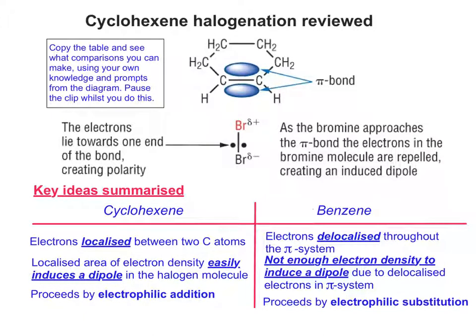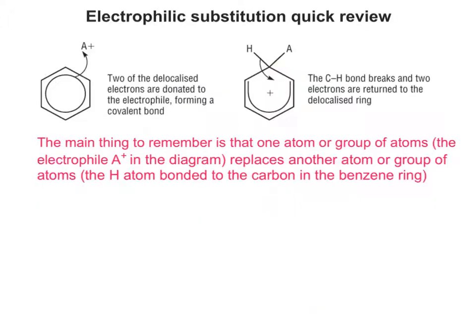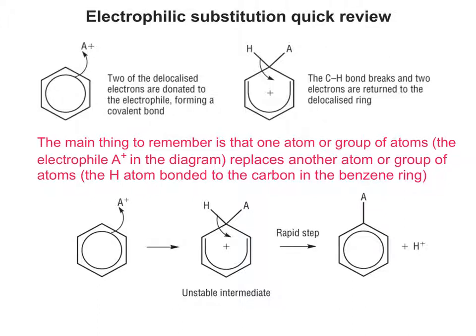Therefore, cyclohexene halogenation proceeds by electrophilic addition, whereas benzene halogenation proceeds by electrophilic substitution. The main thing to remember is that in a substitution reaction, one atom or group of atoms — in this case the electrophile A+ — replaces another atom or group of atoms, in this case the hydrogen atom bonded to the carbon in the benzene ring. This leads to a generic mechanism at the bottom that can be applied across several different electrophiles.